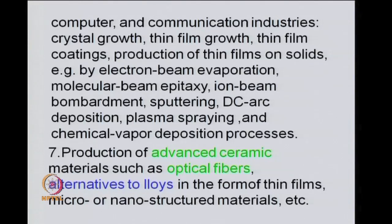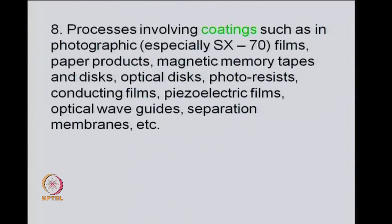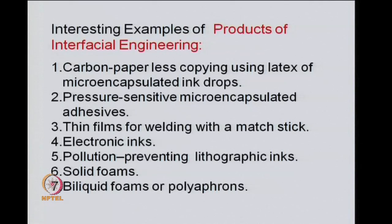The next example is production of advanced ceramic materials such as optical fibres or alternatives to alloys in the form of thin films, micro- or nano-structured materials. Our eighth example is processes involving coatings like in photographic films, paper products, magnetic memory and optical discs, photo resist, conducting films, piezoelectric films, optical waveguides and membranes for separations.